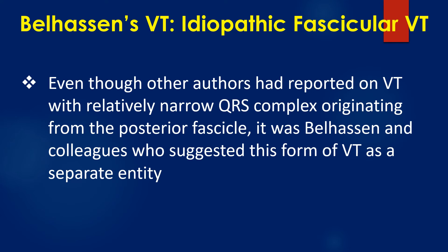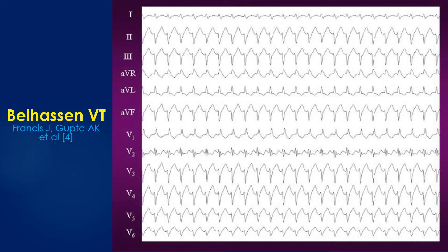Even though other authors had reported on VT with relatively narrow QRS complex originating from the posterior fascicle, it was Belhassen and colleagues who suggested this form of VT as a separate entity. The ECG of idiopathic fascicular ventricular tachycardia shows a classical right bundle branch block pattern with left axis morphology, suggestive of posterior fascicular origin.